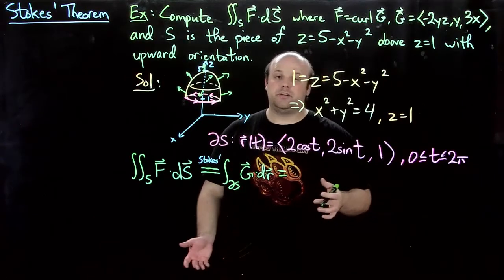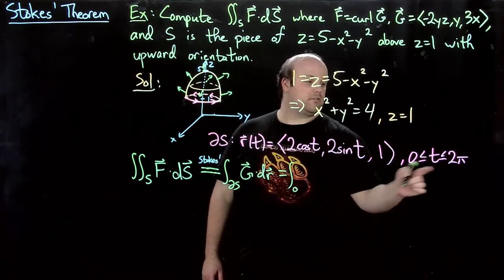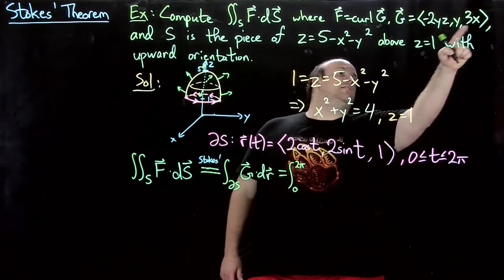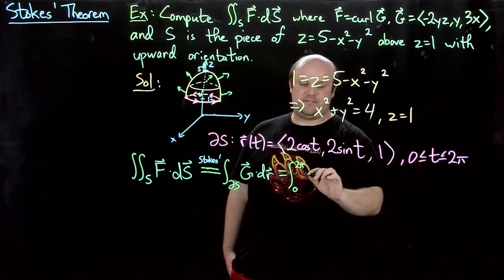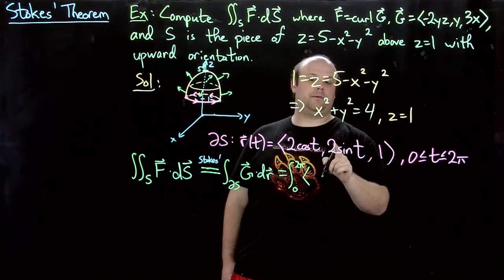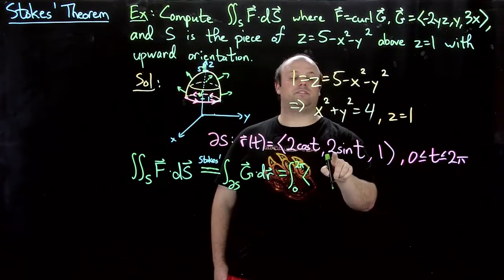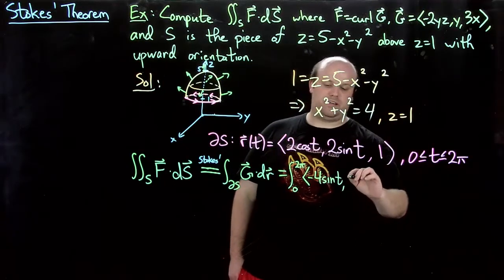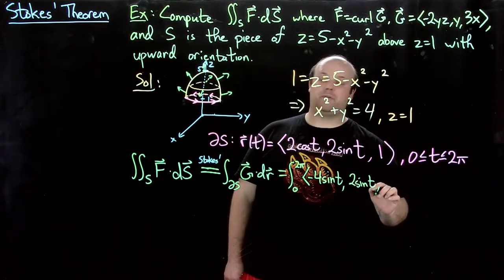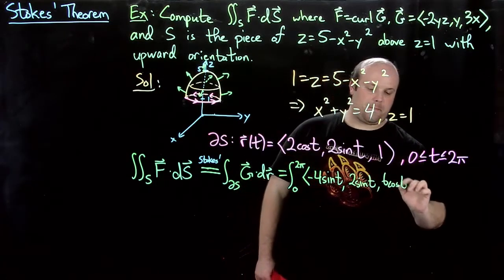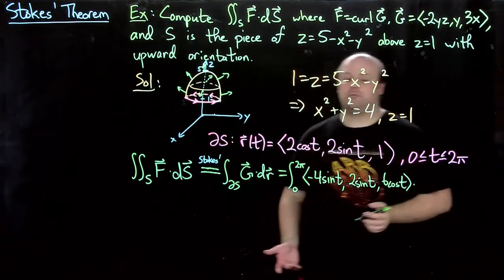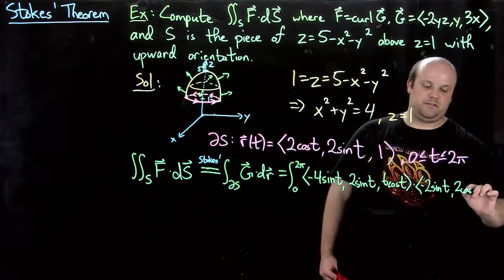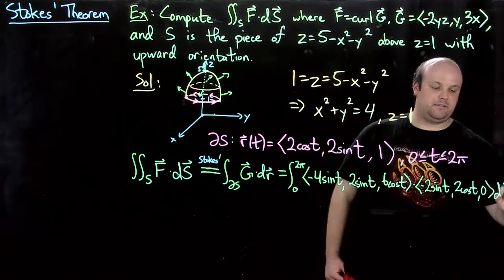So now we just do the usual setup here. This is an integral from 0 to 2π. G is this. So we need to plug r into G. That gives us negative 2 times 2 sine t times 1, so negative 4 sine t. Just y here, so 2 sine t. And 3x, so 6 cosine t. Dot product with r prime: minus 2 sine t, 2 cosine t, 0, dt.